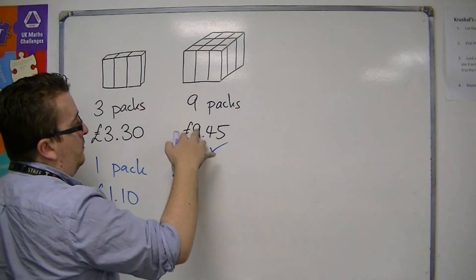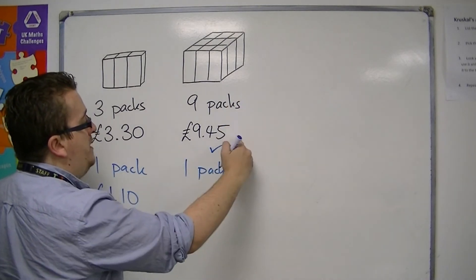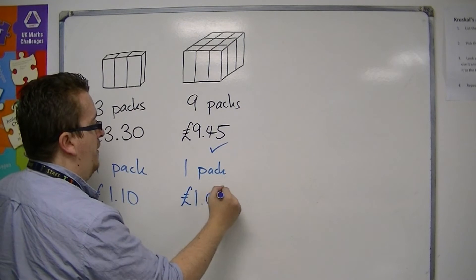And then I could do, well, one pack over here would be dividing by nine, so I would get £1.05.